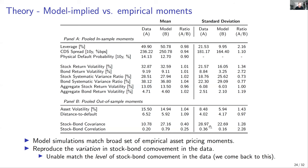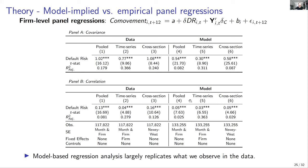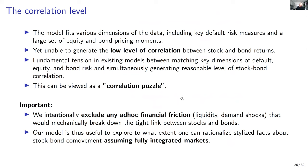Taking the model and rerunning the baseline regression — default risk predicting future co-movement — the model generates smaller coefficients because it fails to generate enough cross-sectional variation in covariance and correlation, but the R-squared is reasonably close to the data. The model is consistent with the data in showing that default risk is related to future co-movement of stocks and corporate bonds.